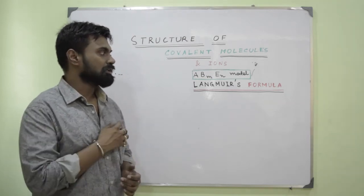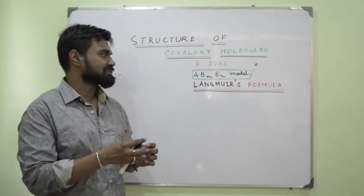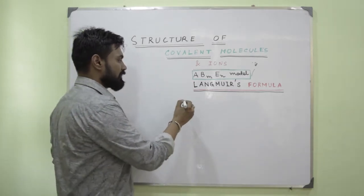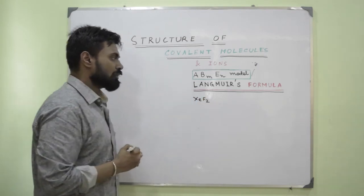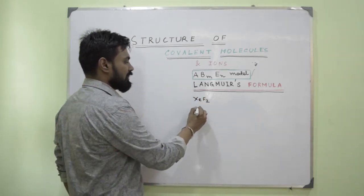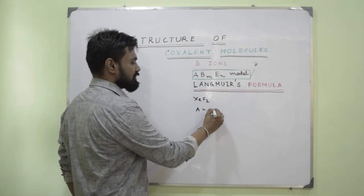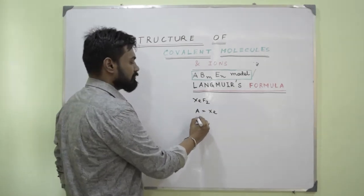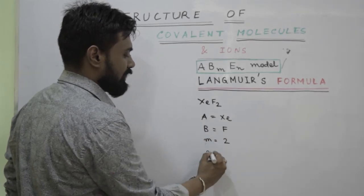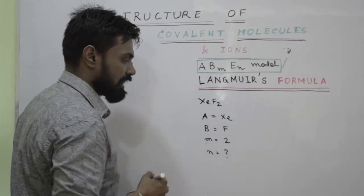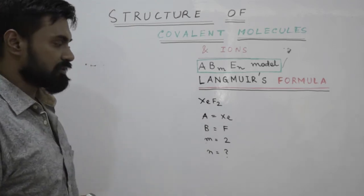Now for solving this we need to take an example. Let us take a very good example, say we take XeF2. So here A we take as xenon, B we take as fluorine, m we take as 2, and n which is the number of lone pairs is unknown. So how to solve this out?